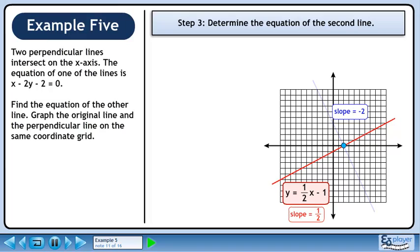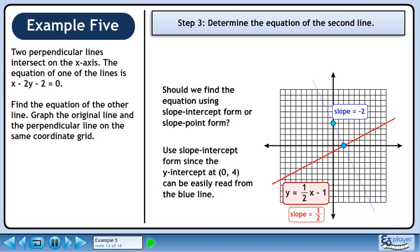In step 3, we'll determine the equation of the second line. Should we find the equation using slope-intercept form or slope-point form? Use slope-intercept form since the y-intercept at (0, 4) can be easily read from the blue line.